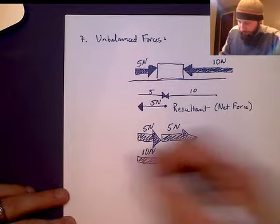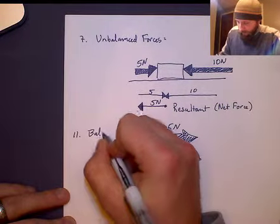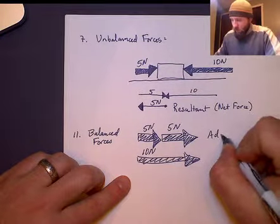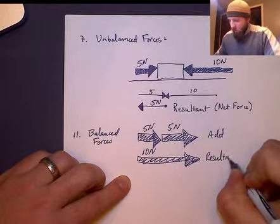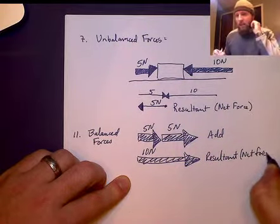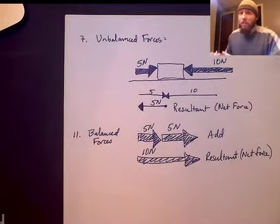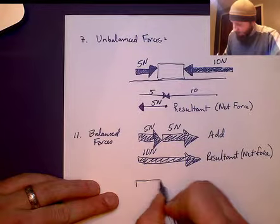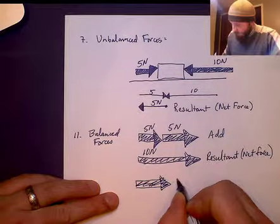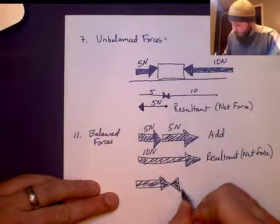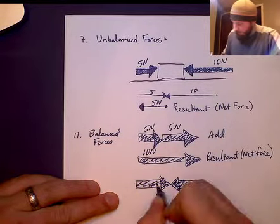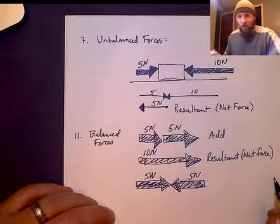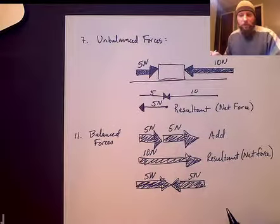We've now moved from unbalanced forces to balanced forces, which is number eleven. When two balanced forces are in the same direction, we add them to get the resultant net force. If balanced forces are in opposite directions, we subtract. With five newtons and five newtons in opposite directions, we subtract them for the resultant force.